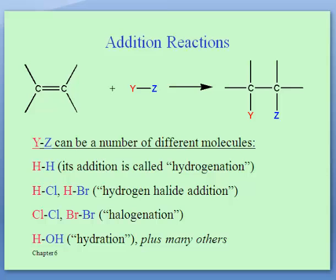The last example, hydration, is adding water across a double bond, so a new hydrogen appears at one of those carbons and an OH group appears right next door. There are many other examples, but we'll predominantly focus on adding hydrogen halides across the double bond, adding halogens themselves — two chlorines or two bromines — and creating alcohols by adding a water molecule. That's how you can introduce an OH group into a molecule.